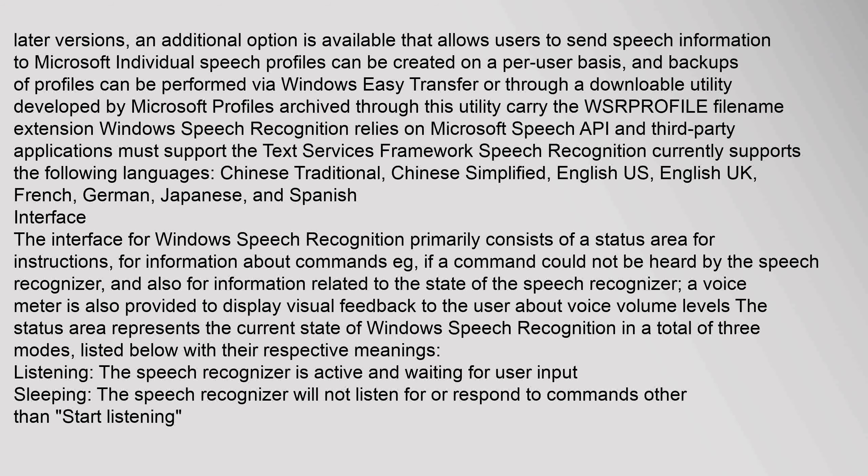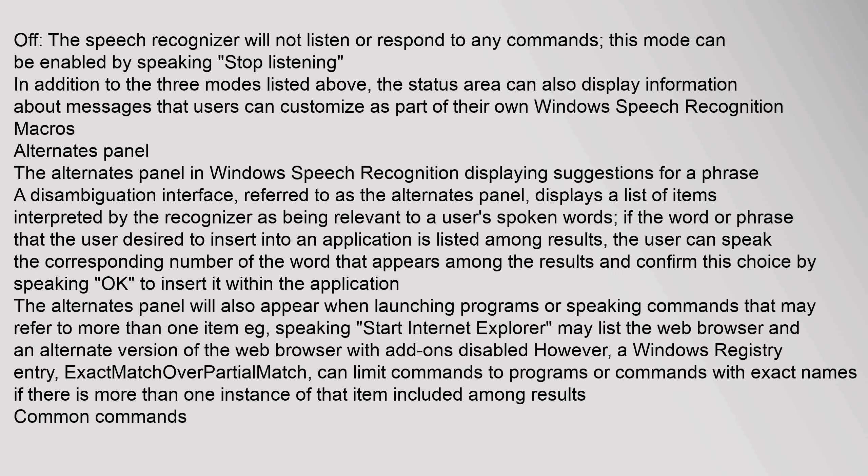The interface for Windows Speech Recognition primarily consists of a status area for instructions, for information about commands (e.g., if a command could not be heard by the speech recognizer), and for information related to the state of the speech recognizer. A voice meter is also provided to display visual feedback about voice volume levels. The status area represents the current state in three modes: Listening (the speech recognizer is active and waiting for user input), Sleeping (the speech recognizer will not listen for or respond to commands other than 'Start listening'), and Off (the speech recognizer will not listen or respond to any commands, enabled by speaking 'Stop listening'). The status area can also display information about messages that users can customize as part of their own Windows Speech Recognition macros.